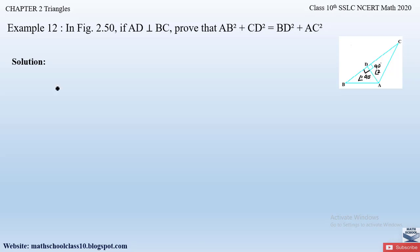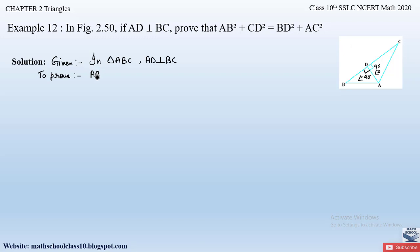Since both of them form right-angle triangles, we will apply the Pythagoras theorem to solve this problem. First, let us write down what is given: in triangle ABC, AD is perpendicular to BC. We have to prove that AB² + CD² = BD² + AC².